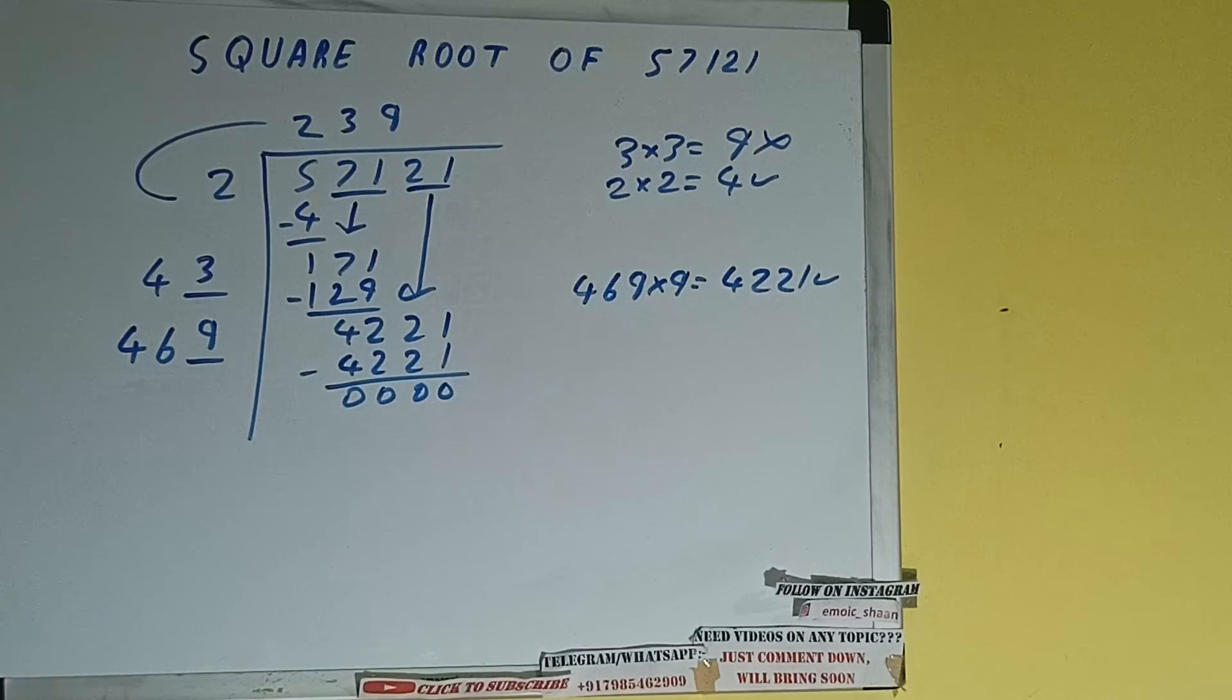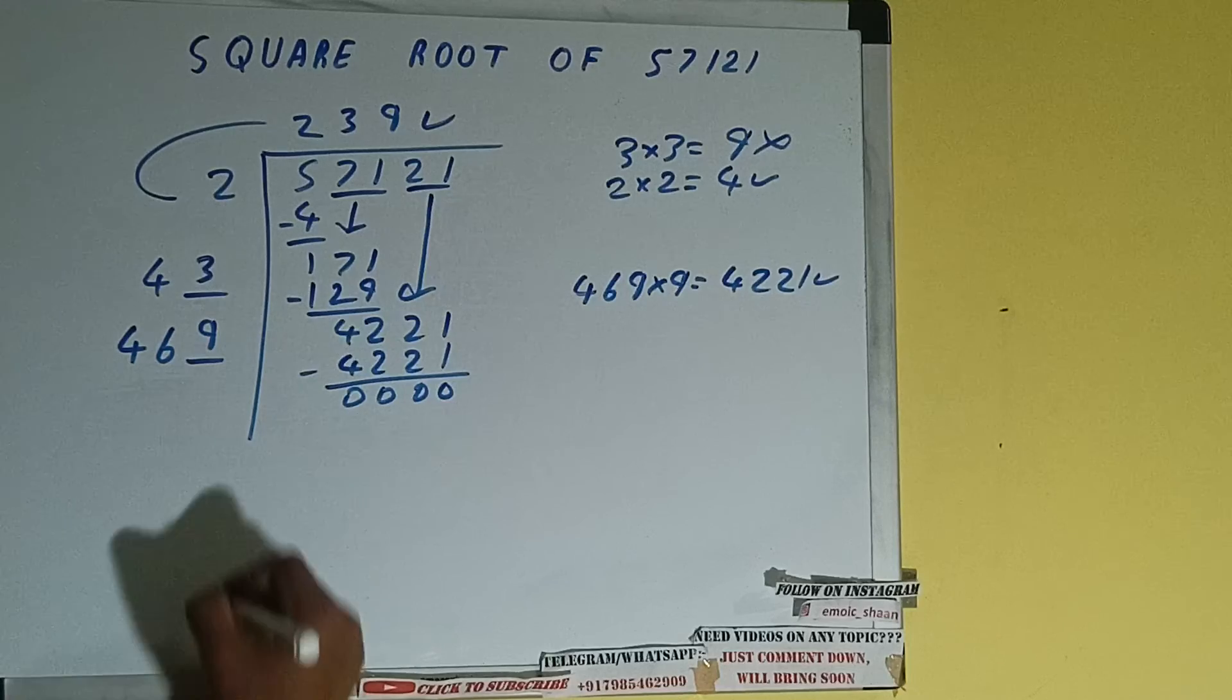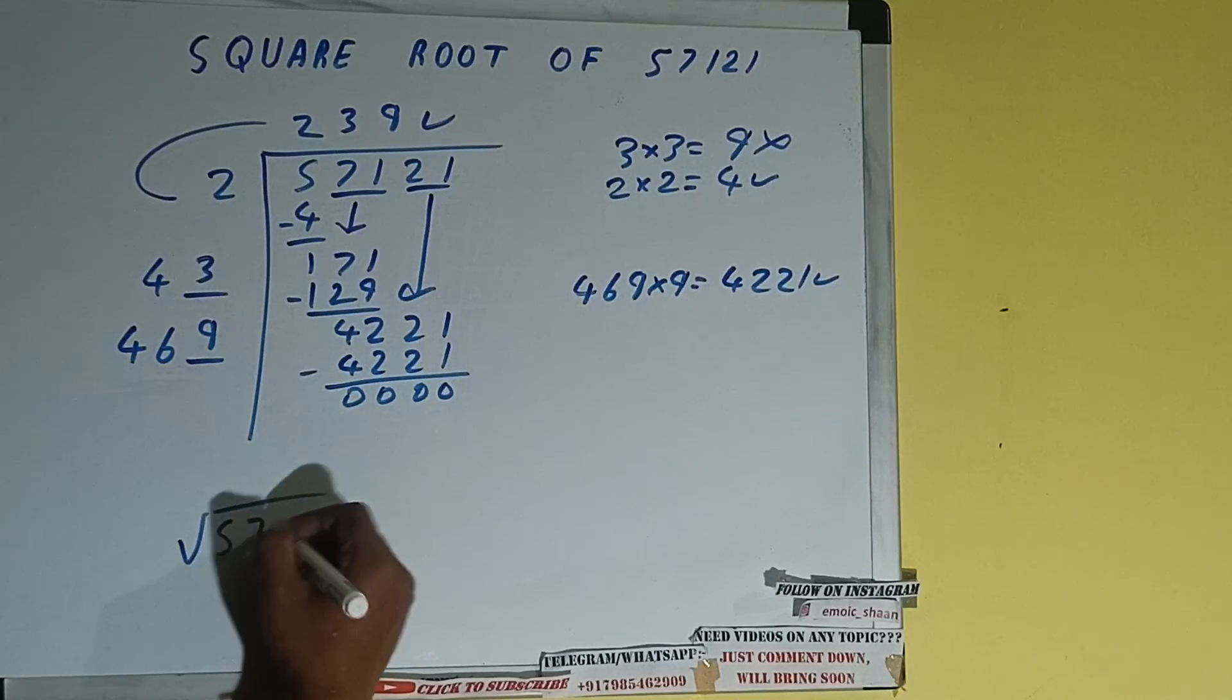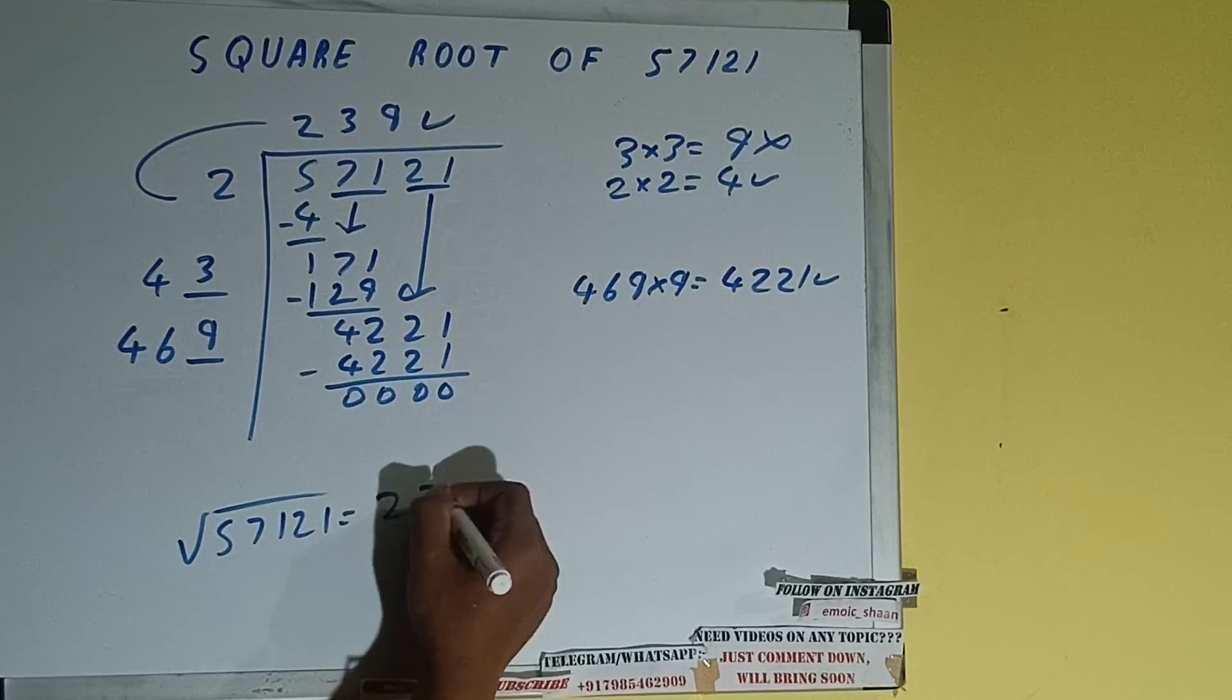Once we are left with 0, whatever is in the quotient will be the answer, that is 239. So square root of 57121 will be 239.